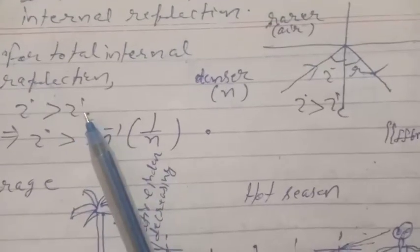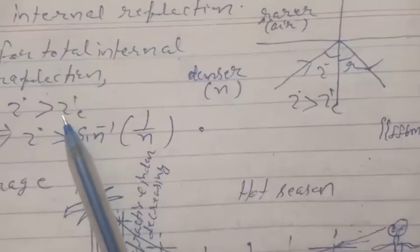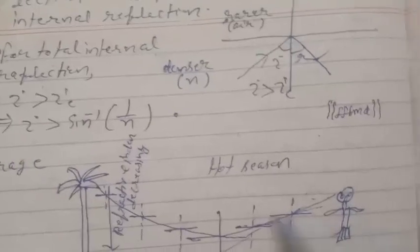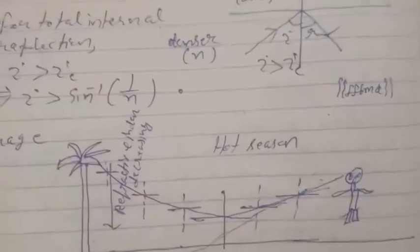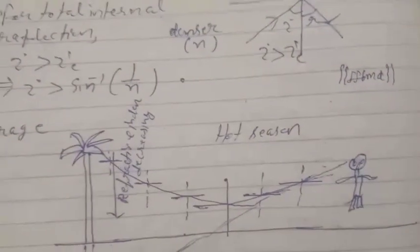That is, i will be equal to r, and this phenomenon is called total internal reflection. For total internal reflection, i must be greater than the critical angle, which means the angle of incidence must be greater than sin inverse of 1/n, because we have calculated the value of the critical angle ic as sin inverse 1/n. This is the condition for total internal reflection.